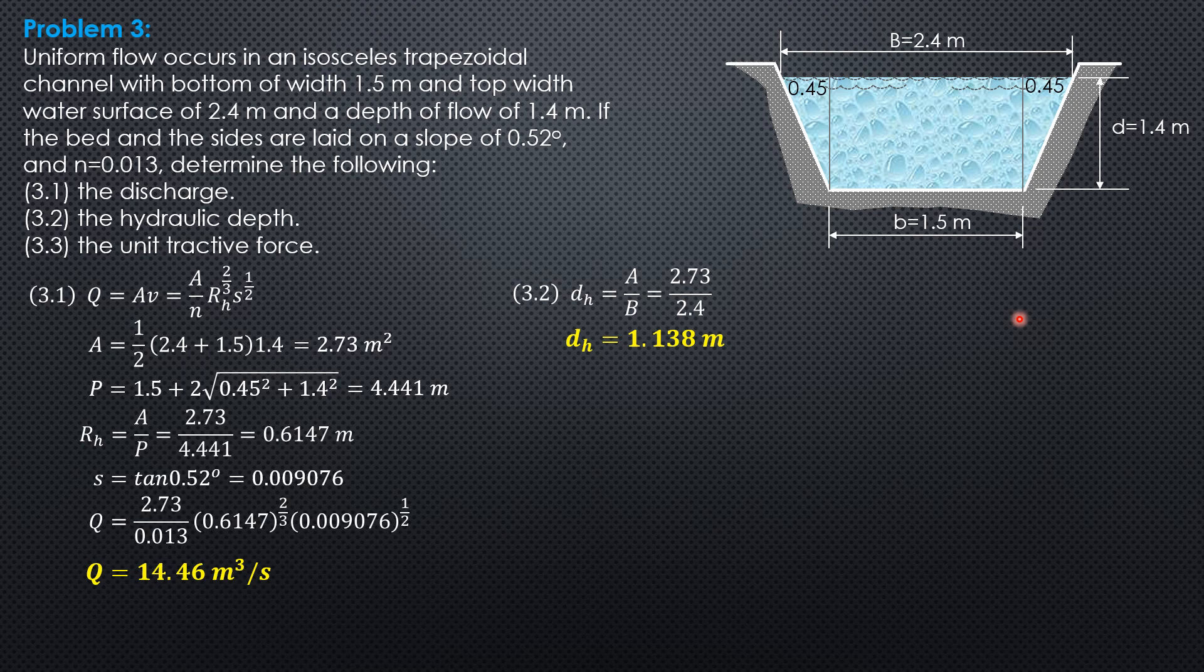Then the unit tractive force is boundary shear stress, tau naught, gamma times hydraulic radius times slope. So 9,810 newtons per cubic meter, 0.6147, then 0.009076. So it is 54.73 pascals. That's it.